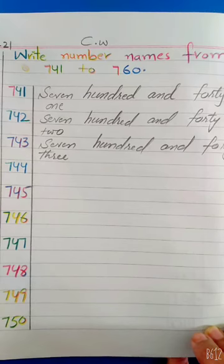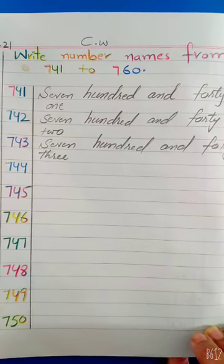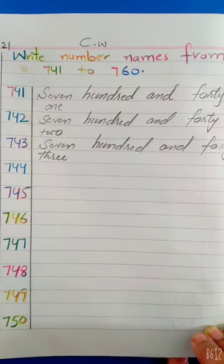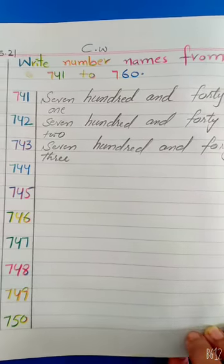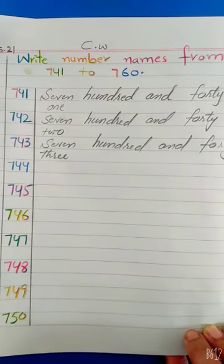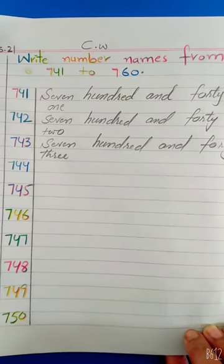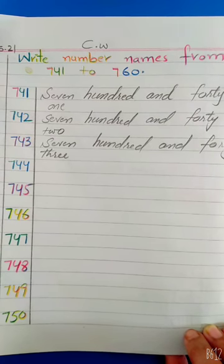You have to complete the number names from 741 to 760 and revise the tables from 2 to 5. Record your voice and send me on WhatsApp group.